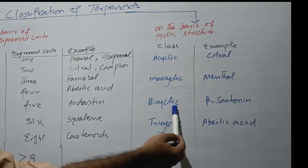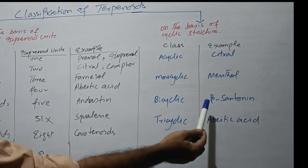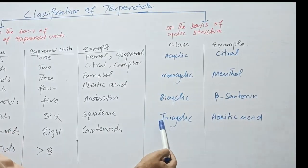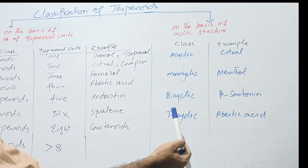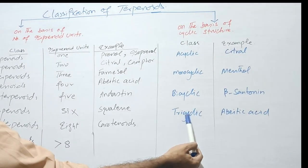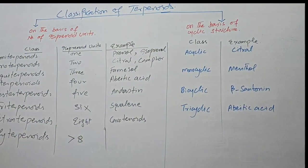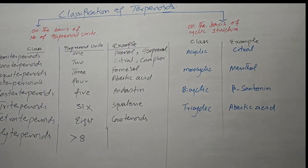Bicyclic terpenoids contain two rings, for example beta-santonin. Tricyclic terpenoids contain three ring in their structure, for example abetic acid. This is all about classification of terpenoids. Thank you very much.